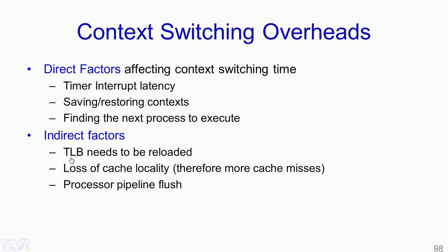Among the indirect factors, the TLB — the Translation Lookaside Buffer, a cache storing recently used page mappings — needs to be reloaded. When switching processes, the page tables change, so the TLB must be flushed and refilled, which takes time and adds overhead. Another indirect factor is loss of cache locality: after a context switch, the cache must be reloaded for the new process, causing cache misses and additional overhead.